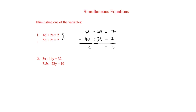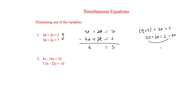However, we can't finish there as we have to find out what e is equal to. To do this we substitute 5 back into the first equation: 4 times 5 plus 2e equals 2, so 20 plus 2e equals 2. Rearranging, 2e equals 2 minus 20, which is minus 18, so e equals minus 9. Our two answers are d equals 5 and e equals minus 9.